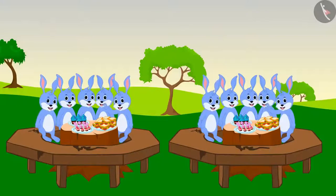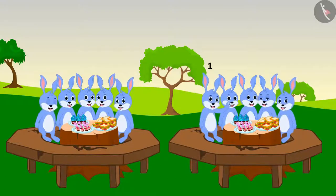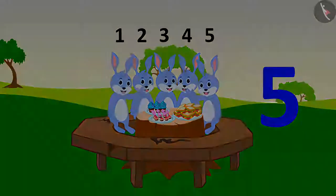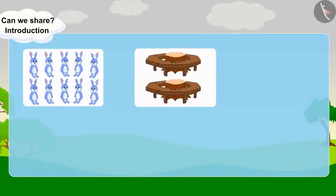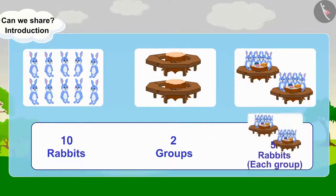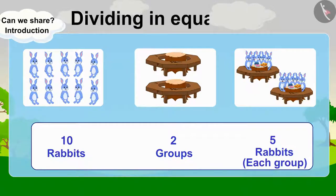Let us see how the rabbits are sitting. There are ten rabbits and they are sitting in two groups. Each group has one, two, three, four, five rabbits seated in them. A total of ten rabbits are seated in two groups, each group having five rabbits. It is called dividing in equal groups.